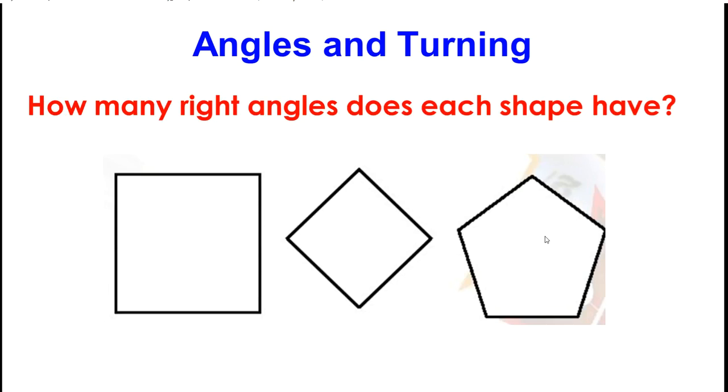How many right angles does each shape have? Here we have a square. How many right angles do you think this square has got? Let's count. 1, 2, 3, and 4. The square has got 4 right angles.